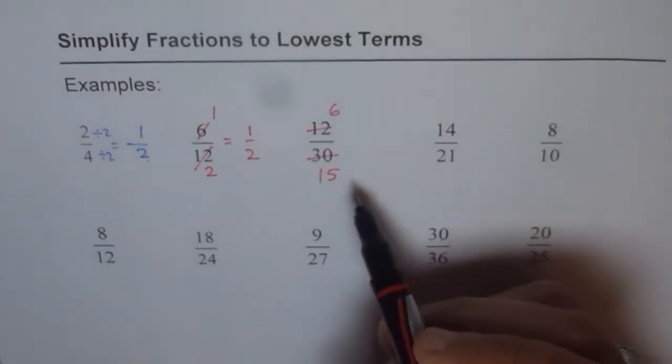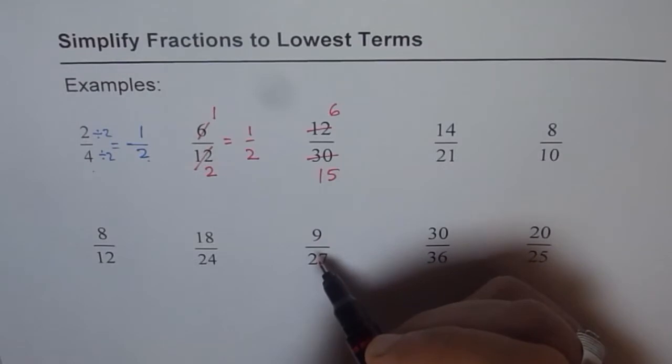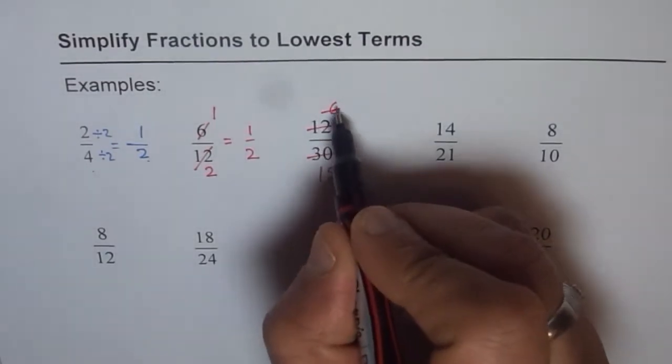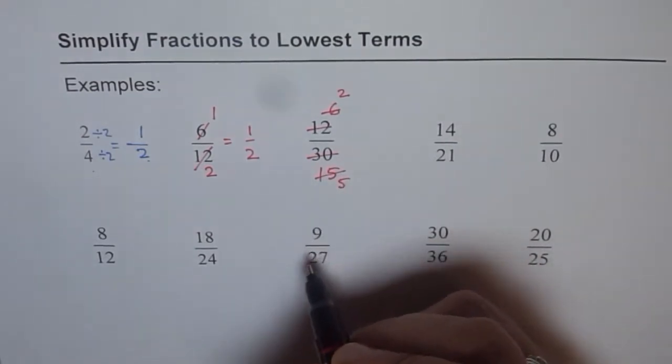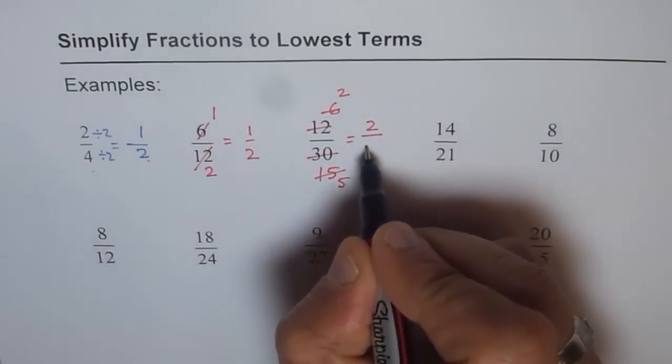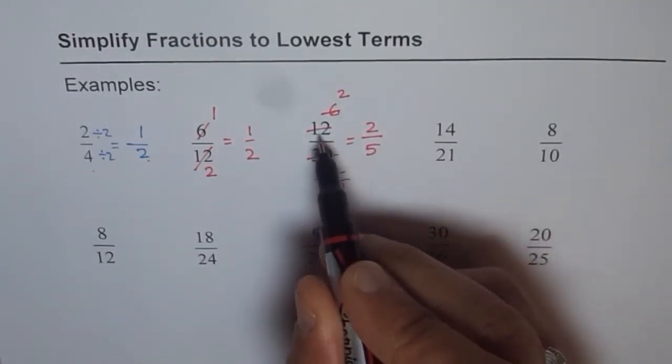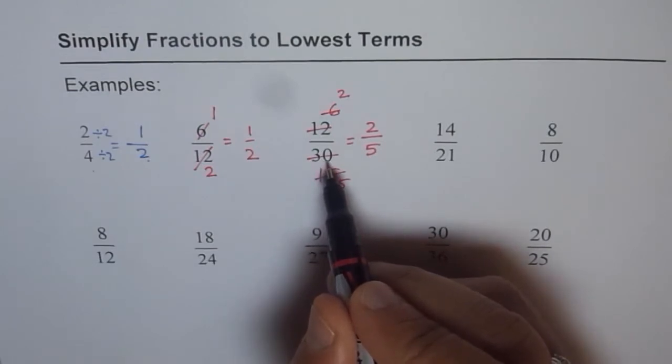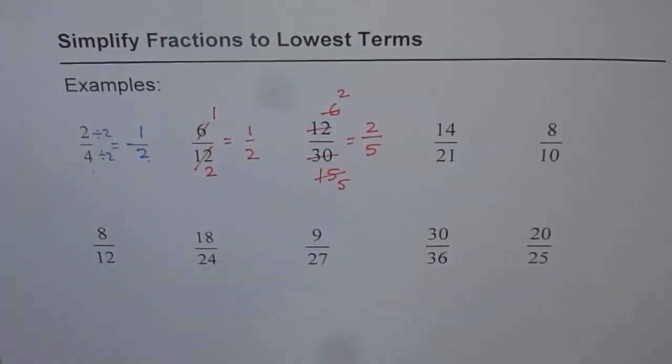Now, can you suggest a number which can divide into 6 and 15? Both of them. The number is 3. So 3 goes 2 times with 6 and 5 times 3 is 15. So we get 2 over 5. So 2 over 5 is equivalent to 12 over 30. Can you further reduce it? No, you can't. So that is the lowest term. I hope you understand the concept now.